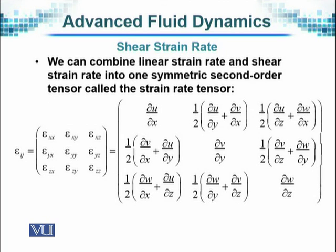We can combine the linear strain rate and shear strain rate into one symmetric second-order tensor called the strain rate tensor. The shear strain rate components appear at their relevant positions, forming a symmetric matrix that fulfills all mathematical rules applied to tensors. This fits very naturally into tensor calculus and can be represented clearly with the shear strain rate components placed symmetrically in the tensor matrix.